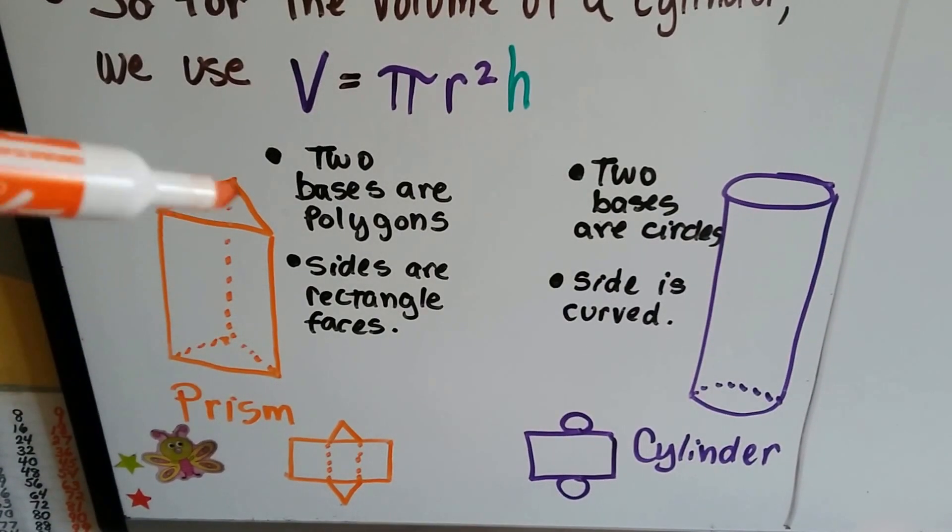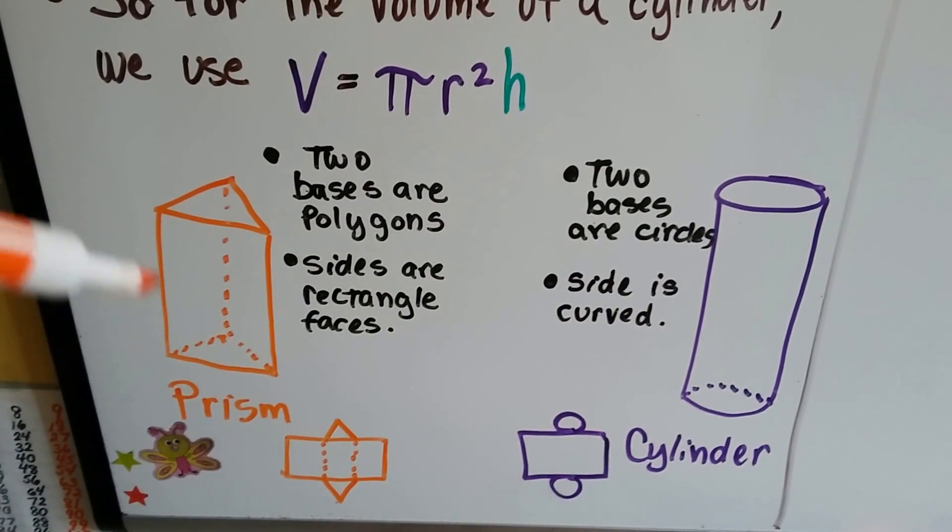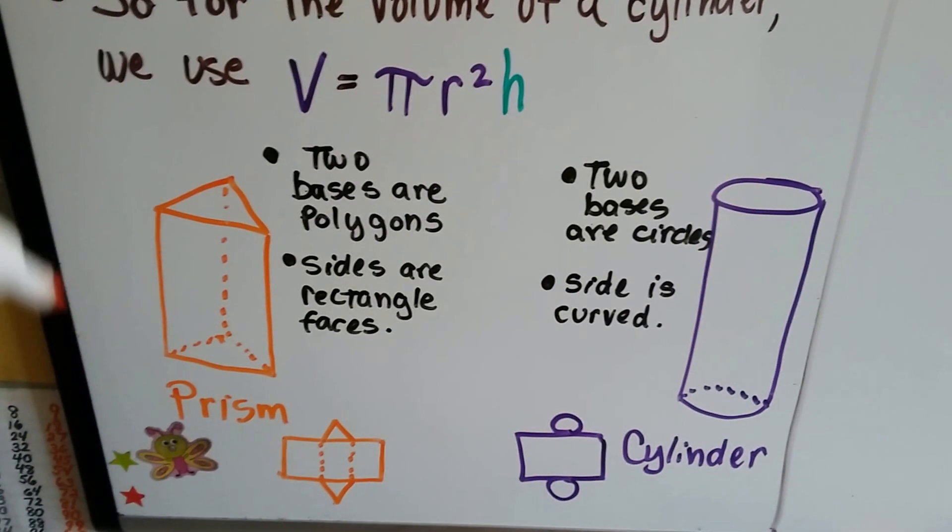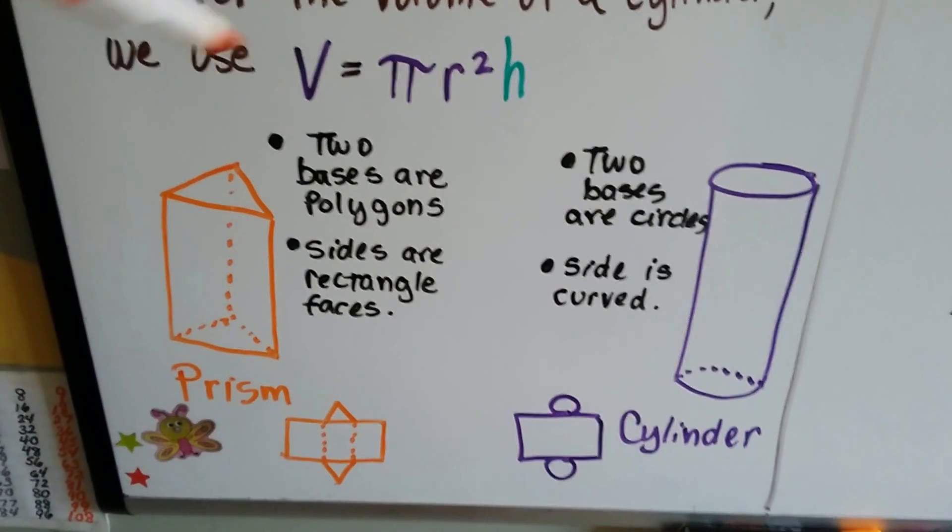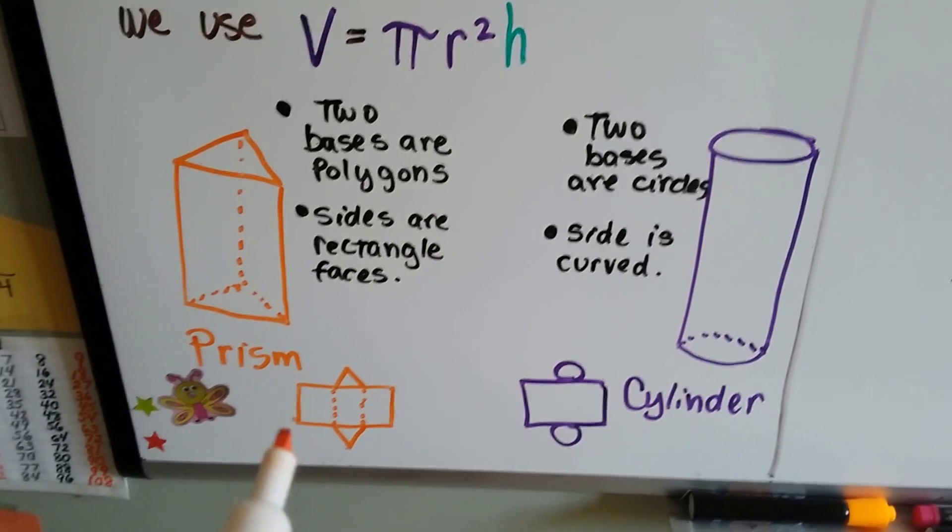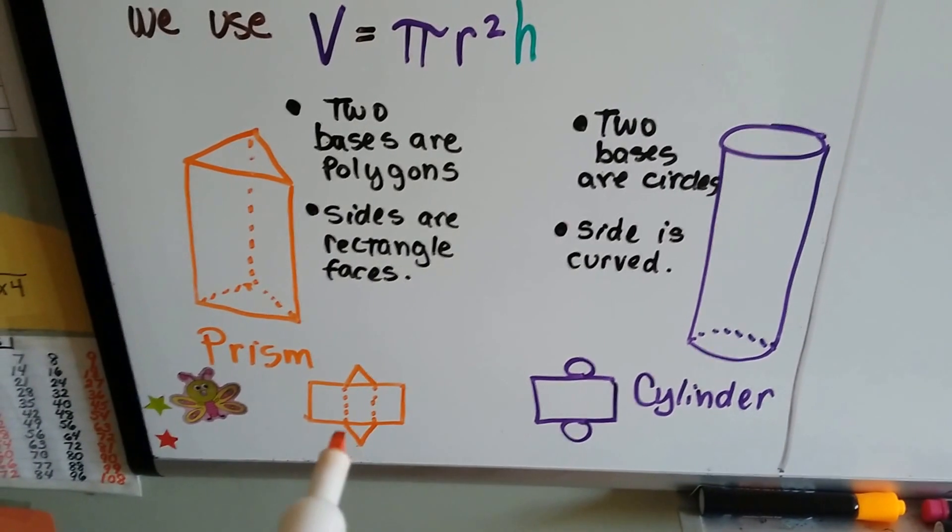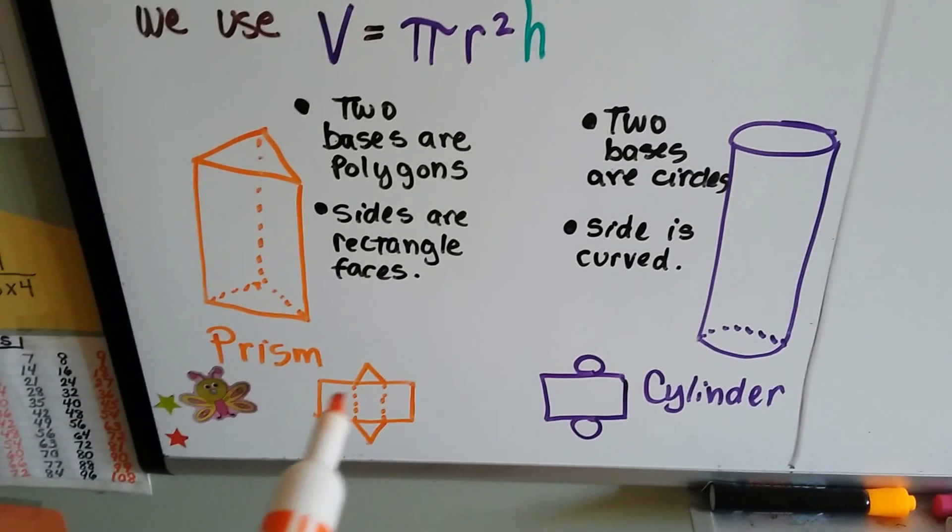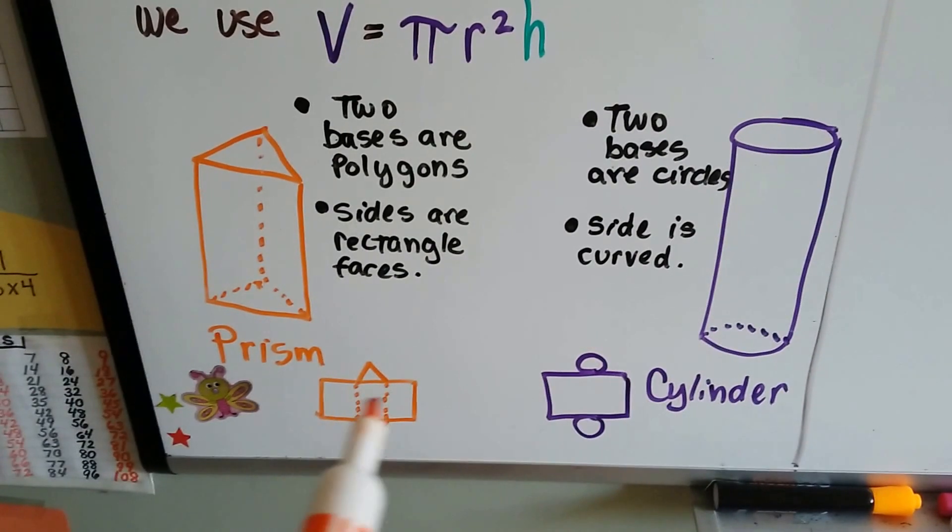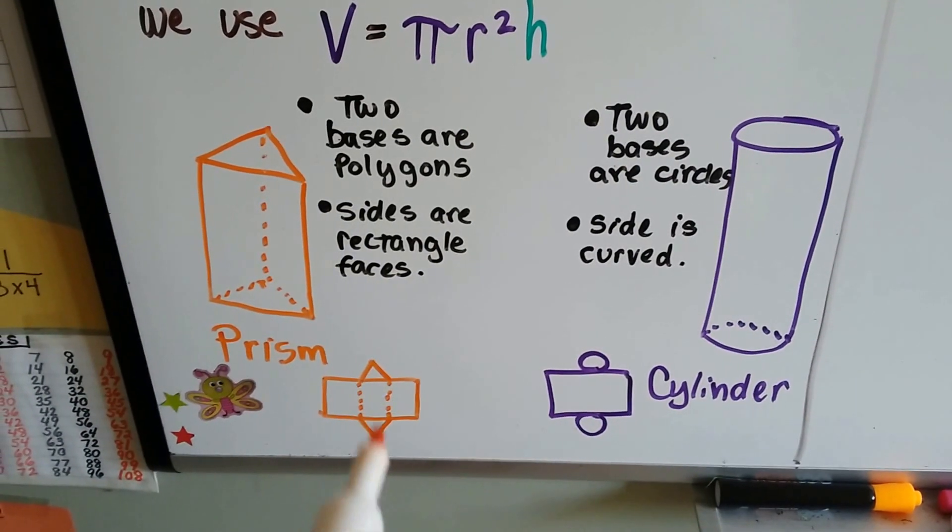So the two bases are polygons, and the sides are rectangle faces. Here's a rectangle face. There's one back here. There's one on this side. And when we open it up to see its net, N-E-T, that's what it looks like when it's opened up. It's called a net. It would be the three rectangular faces and the triangle bases.